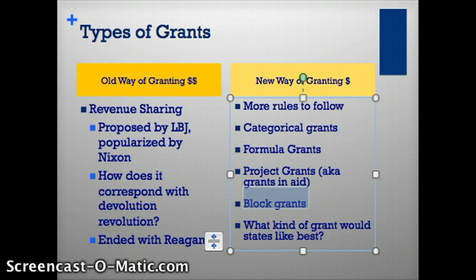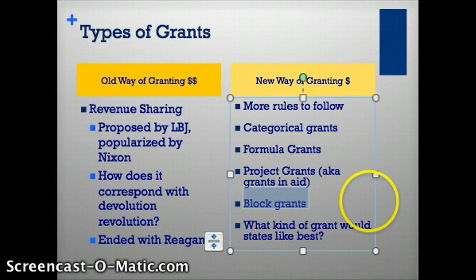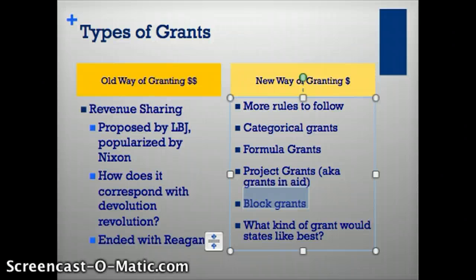The last type is a block grant. Block grants are more general — they don't have to go to a specific thing or a particular category. They're given more or less automatically to states based on broader program areas, like community development or social services. For one state, community development could be building more recreation centers; in another, attracting more businesses; in another, job and education training programs. States have more discretion — more choice — of how they spend that money, and they receive it automatically.